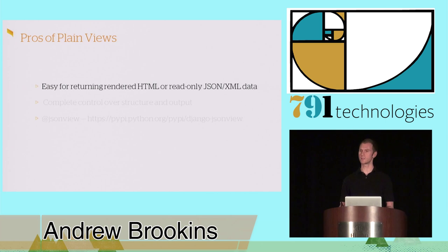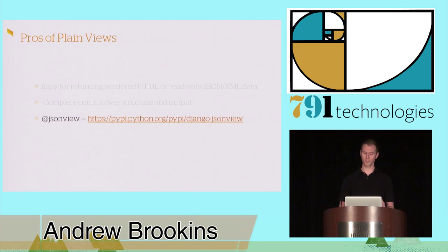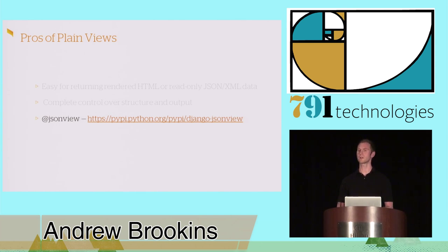As you may or may not know, plain Django views are good for returning snippets of rendered HTML from a template, or something really simple like exposing a read-only API for JSON or XML data. They give you complete control over the structure and output of your data. A little helper I find nice for prototyping is JSON view — Django JSON view — which gives you a decorator to help manage serializing and deserializing Python data structures into JSON.